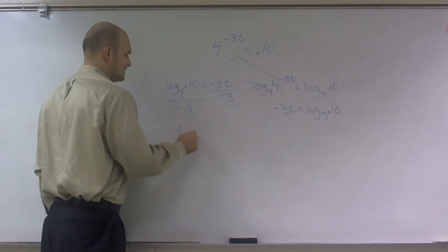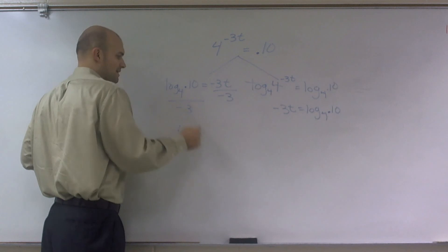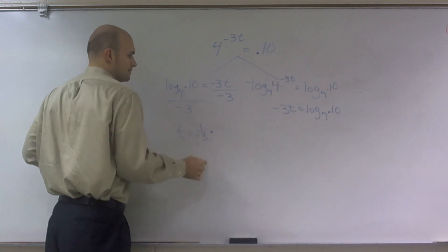Therefore, my final answer is t equals—remember, I think I talked about this last class period—dividing by negative 3 is the same thing as multiplying by negative 3.